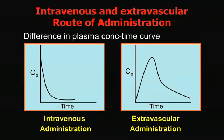Looking at plasma concentration over time: with IV administration, the concentration in the plasma is at its peak immediately upon injection. With extravascular routes — oral, intramuscular, or subcutaneous — it takes time for the drug to build up in the blood plasma, so the concentration is delayed before it eventually decreases as the drug is distributed and eliminated.